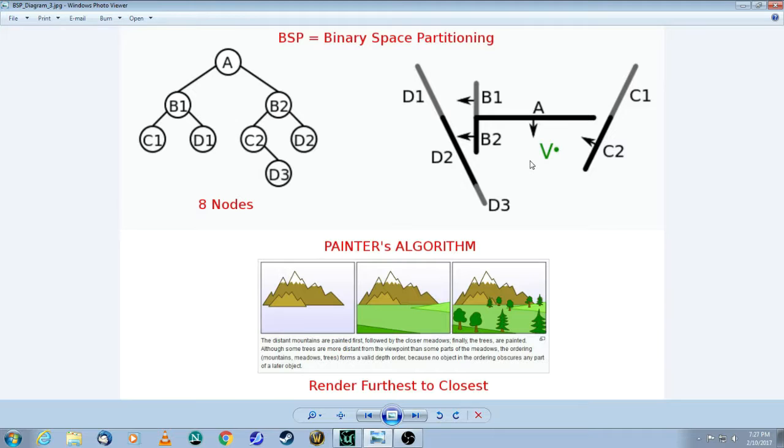first thing you do is always cut the space into two, and hence the word binary. The stuff that's behind you, which you cannot see, and the stuff that's in front of you, which you can see. So, in this case, B1, C1, and D1, you cannot see because you're facing in this direction. Now, you have to take this whole plane,